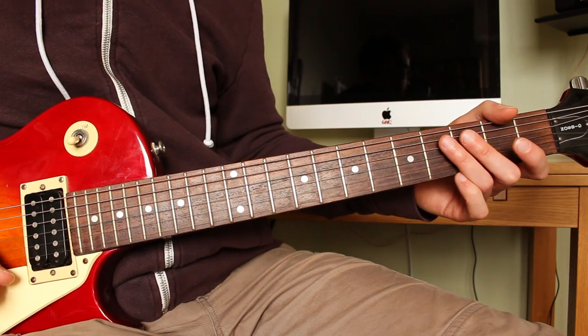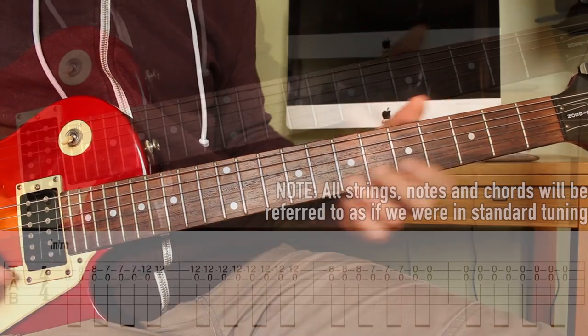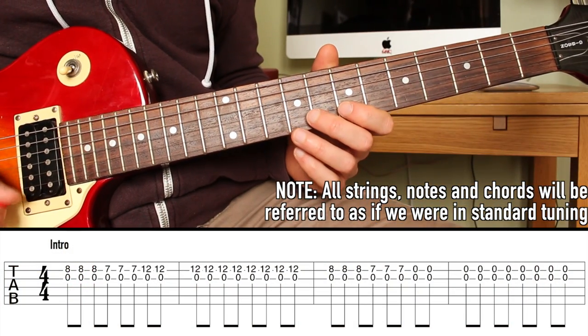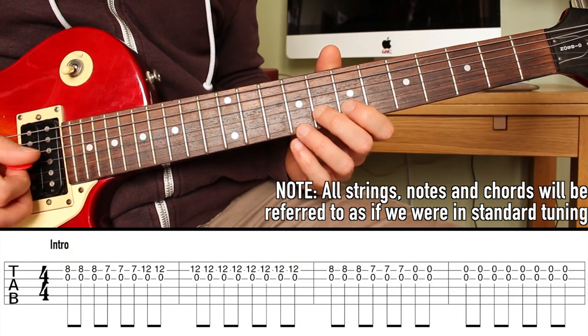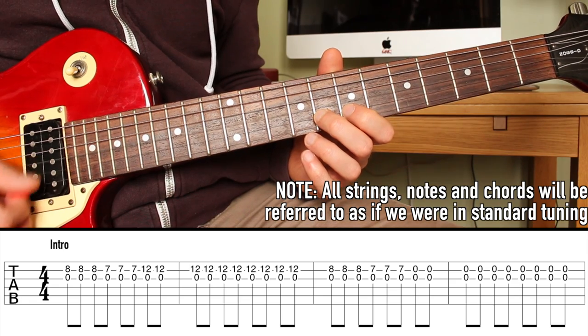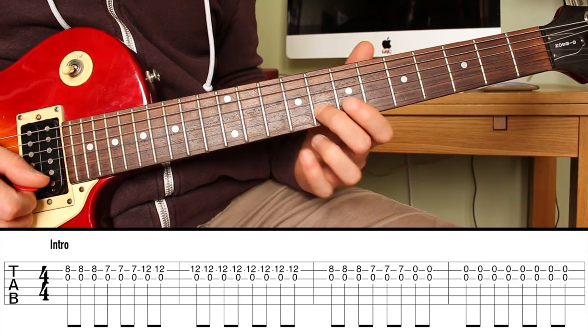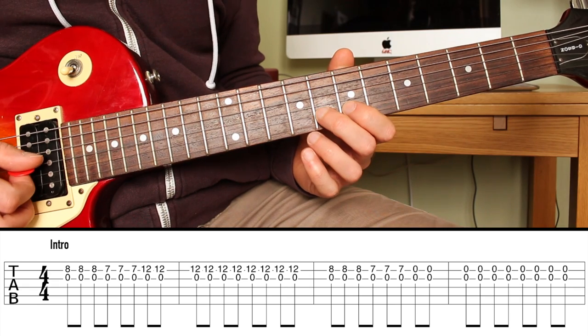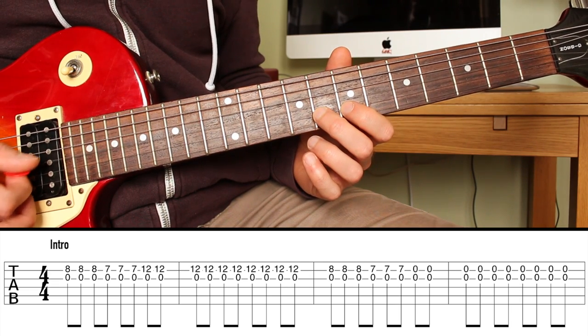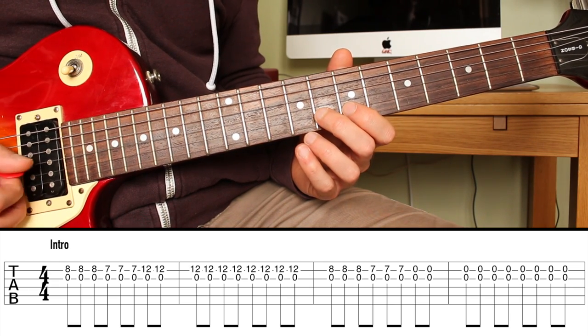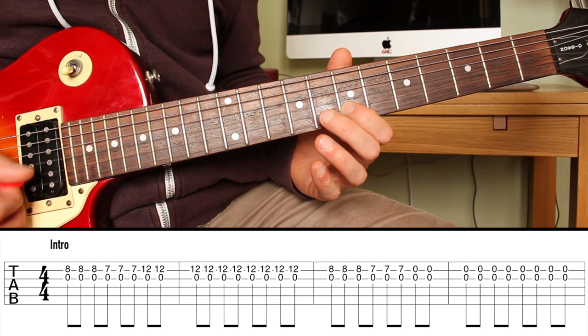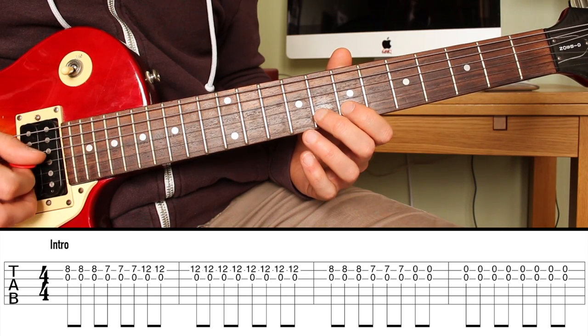Okay, so taking the intro, we have some double stops. We're picking both the G and the B strings. I'm starting up in the 8th fret on the B string, using my 2nd finger. And what we have is we have 8th notes. 1, and 2, and 3, and 4, and... And we go 8, 8, 8, 7, 7, 7. Note the G string continues to ring.